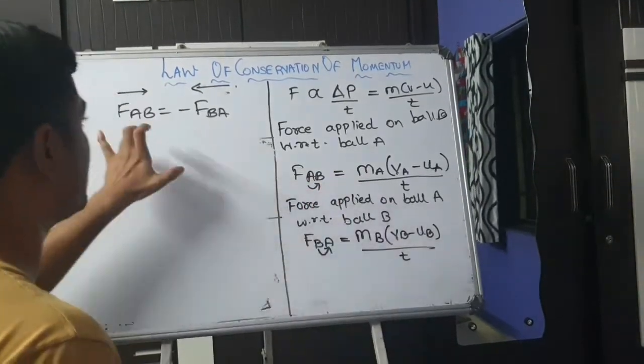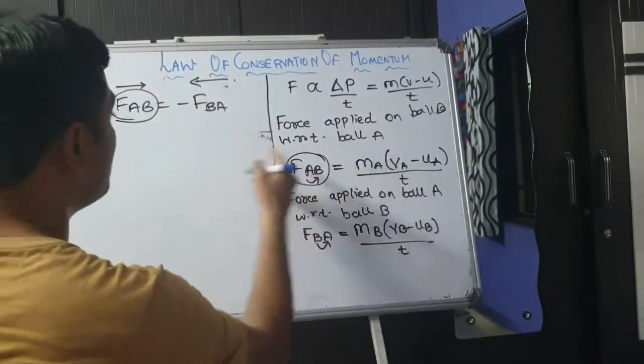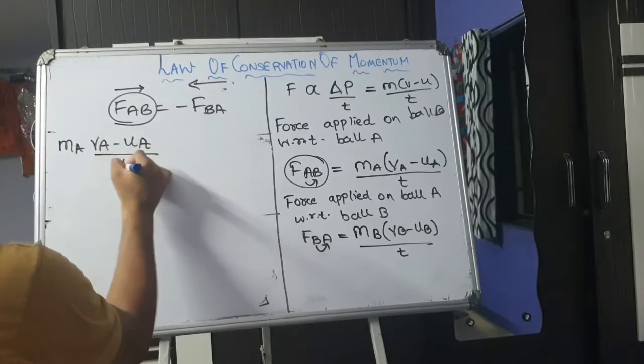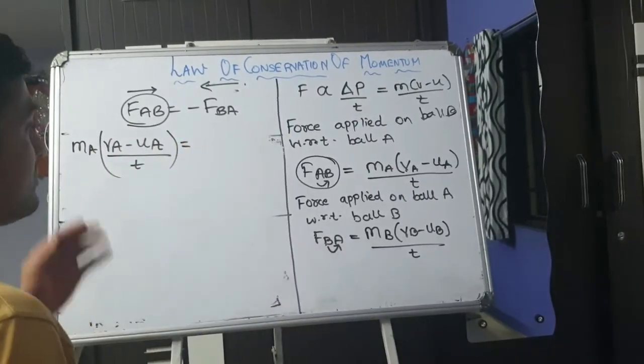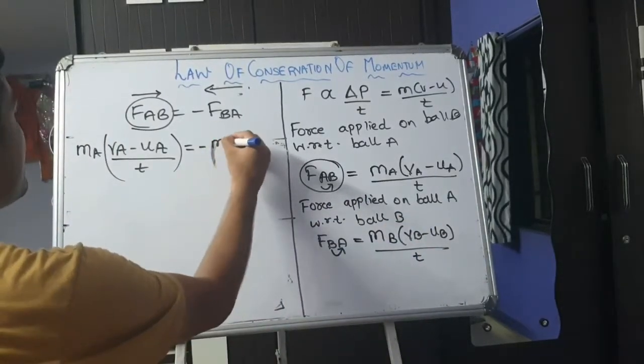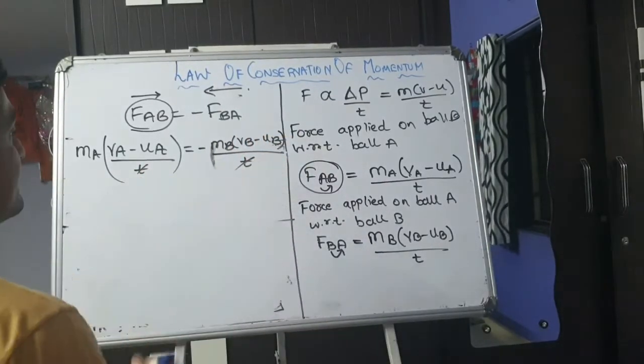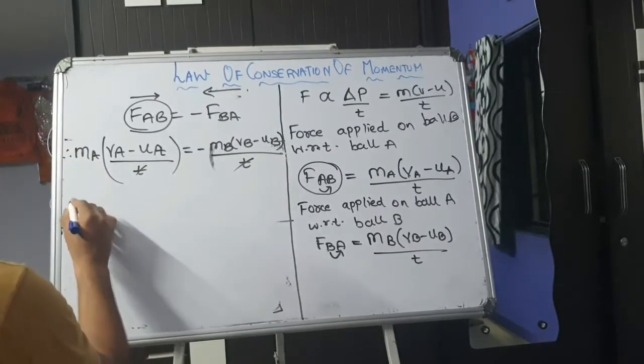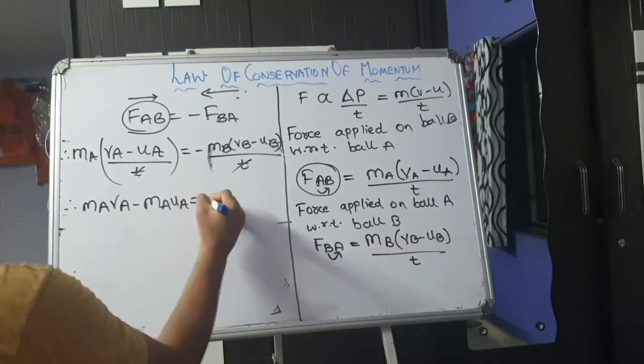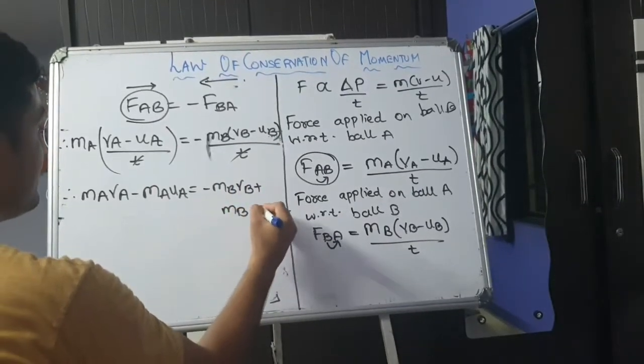Now I will just substitute these two equations over here. So first I will substitute FAB. So what is the value? That is mA, VA minus uA, whole divided by t. That is equal to FBA. What is FBA? Minus of mB, VB minus uB whole divided by t. Now t will be cancelled out from the denominator. Now we will multiply each and every term. mA VA minus mA uA. It is nothing but equal to minus mB VB plus mB uB.